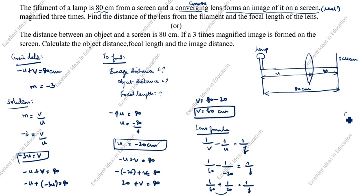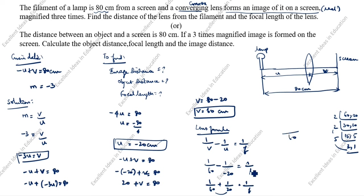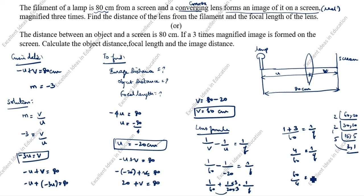We find the LCM of 60 and 20, which is 60. So 1 by 60 plus 3 by 60 equals 1 by f, giving 4 by 60 equals 1 by f. Therefore f equals 60 divided by 4, so f equals 15 centimeters.